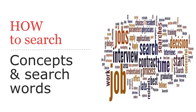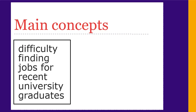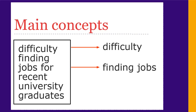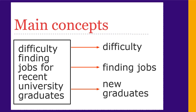Once you know where to search, think for a bit about how you will search before diving in. It's helpful before you start to think about your topic and try to pull out the main concepts, then consider different words that can be used to describe those concepts. This will help make your search results better. For example, if our topic is the difficulty of finding jobs for recent university graduates, our concepts will be difficulty, finding jobs, and new graduates.